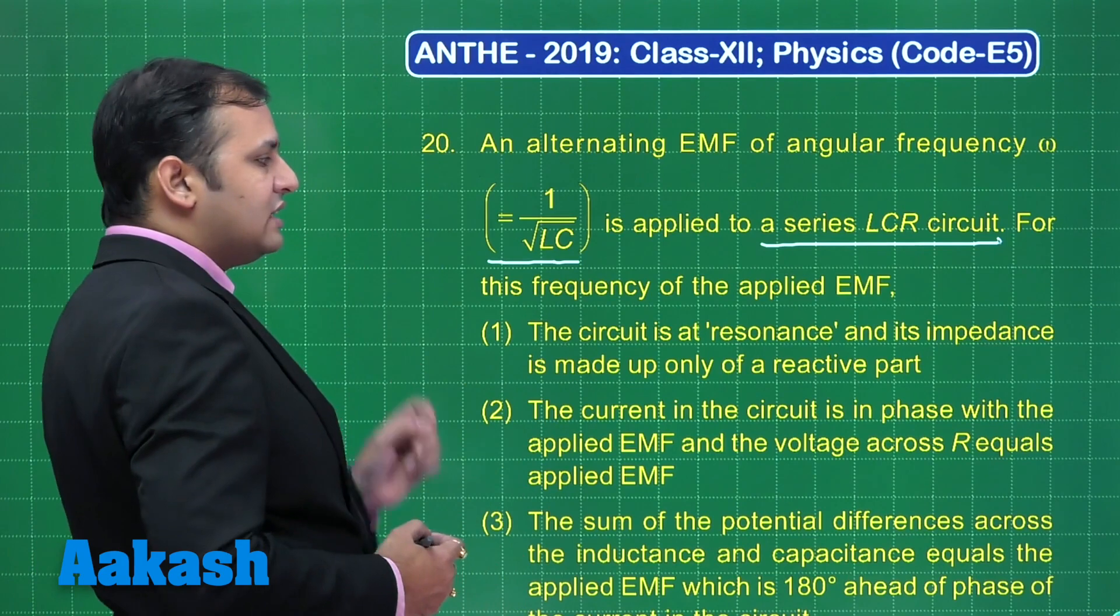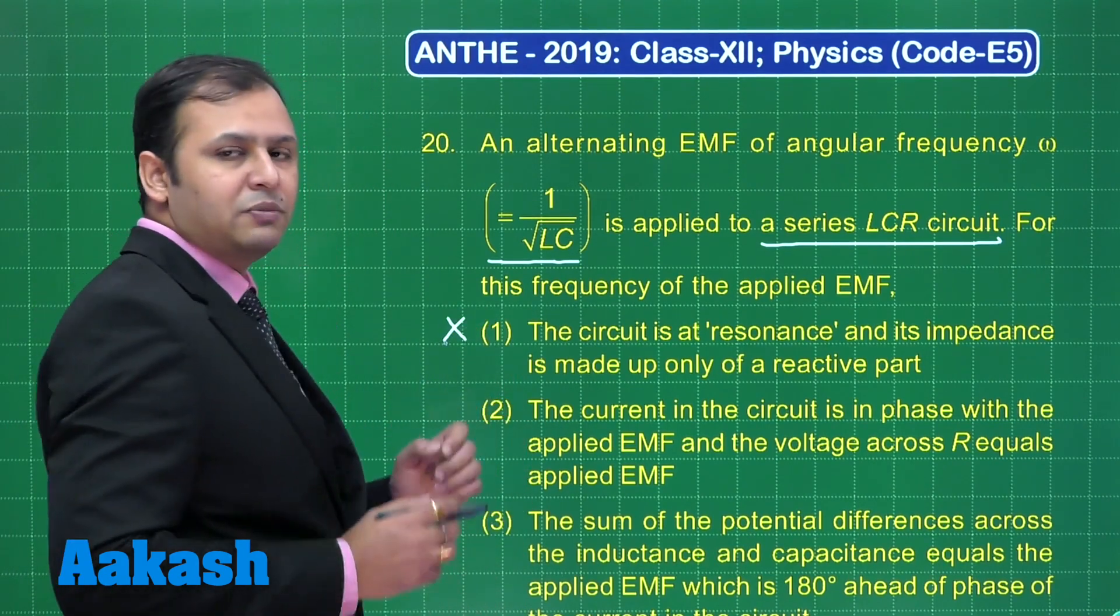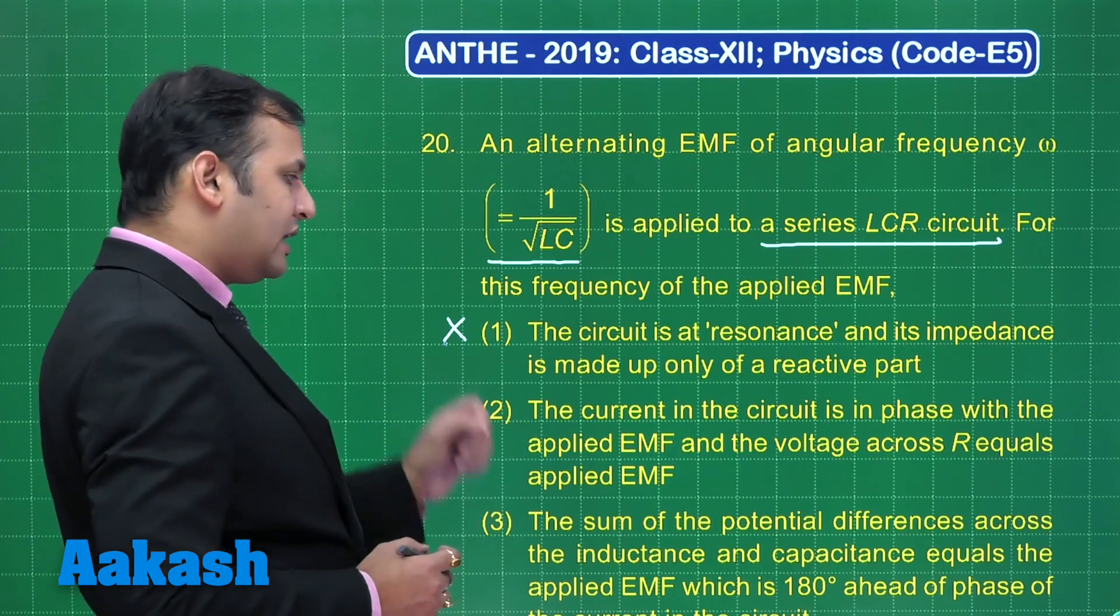So, let us see the first, the circuit is at resonance and its impedance is made up only of reactive part. No, it is made up of resistance. This seems to be correct.